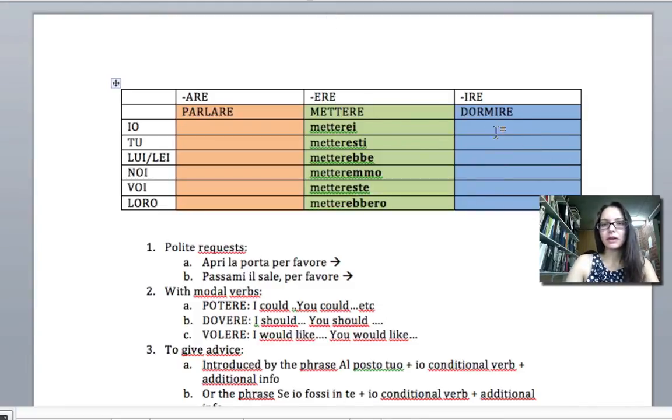The same thing is going to happen with dormire. So we're going to copy up until the r. Dormir up until the r. I'm just going to copy that and then we're going to have the exact same endings as we had with -ere.